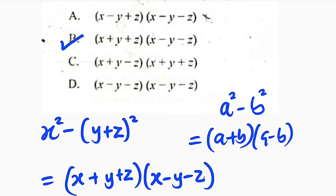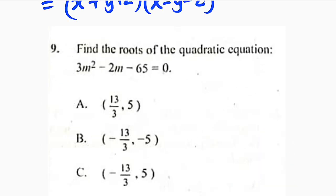So the last question for today is question number 9. Alright, question number 9. We are asked to find the roots of the quadratic equation 3m squared minus 2m minus 65. We can solve this equation by factorization. First of all, you take the leading coefficient. You multiply by the constant term. So let me write the numbers here. 3 multiplied by negative 65. And this will give us negative 195.